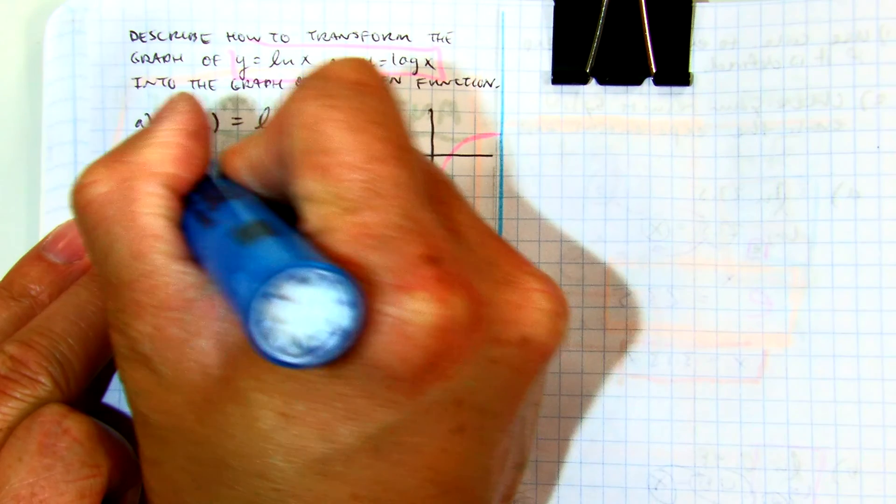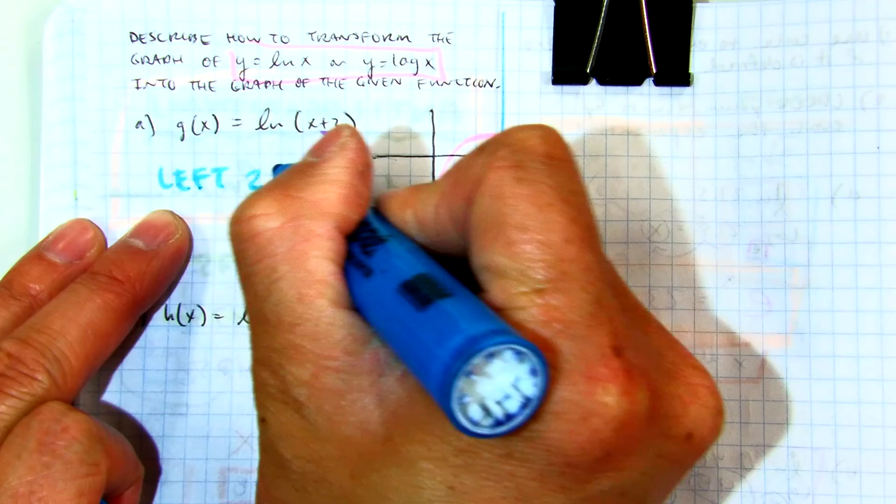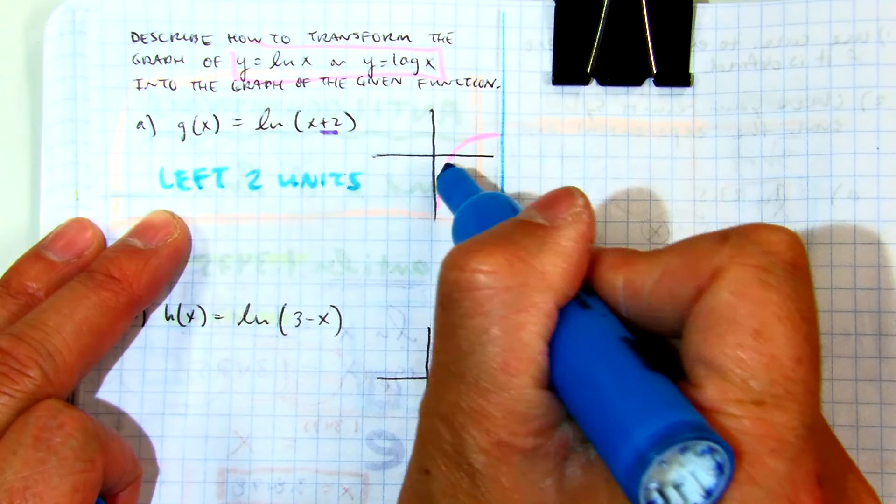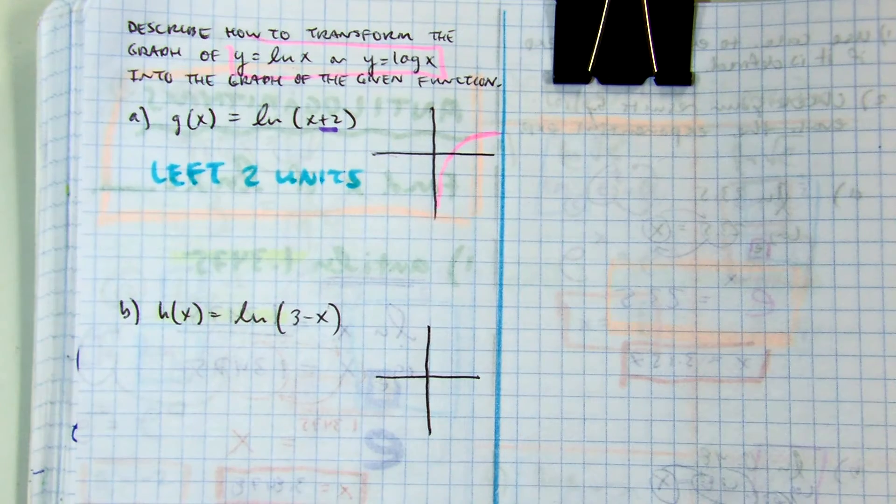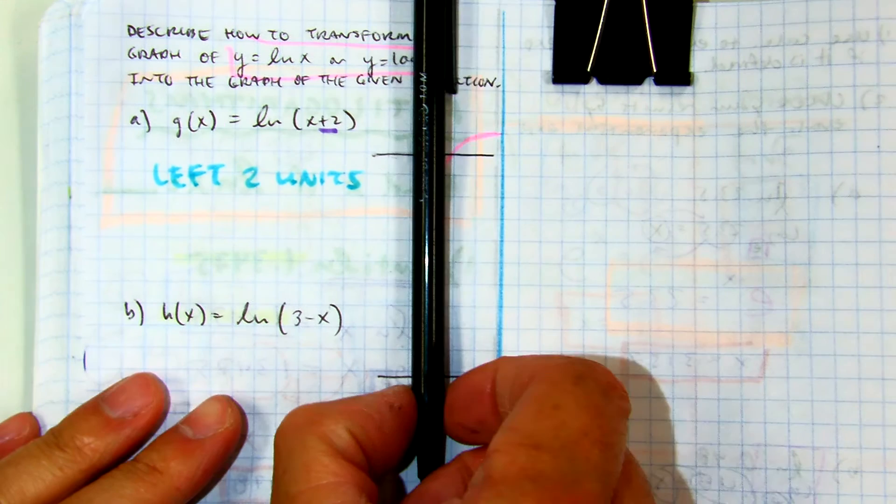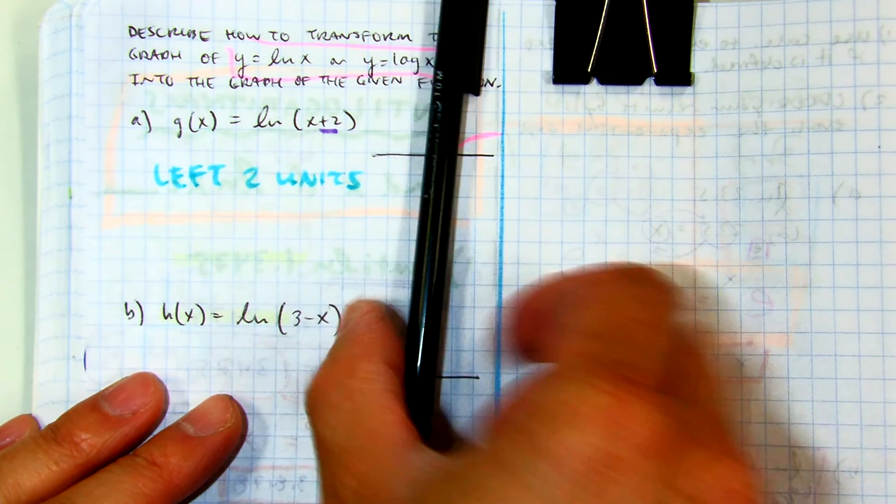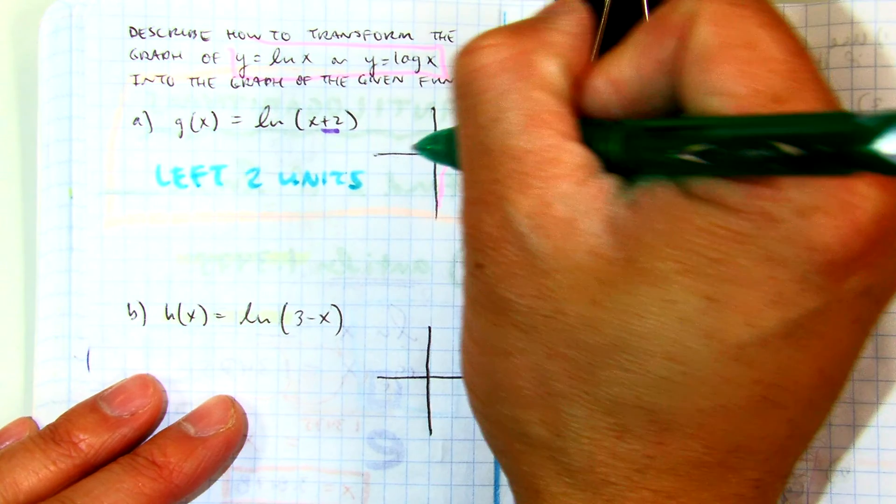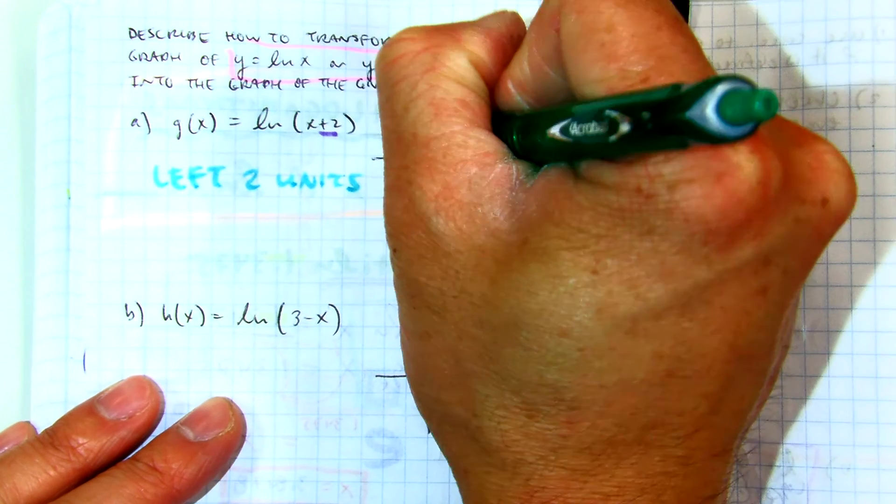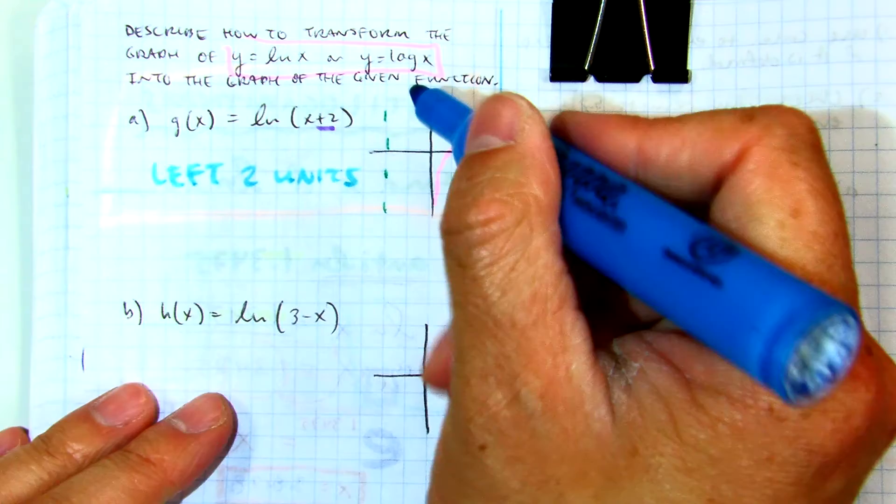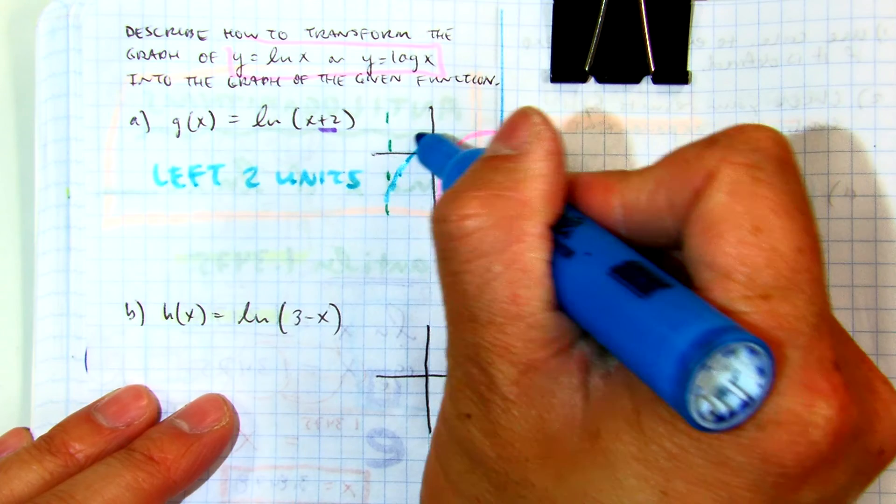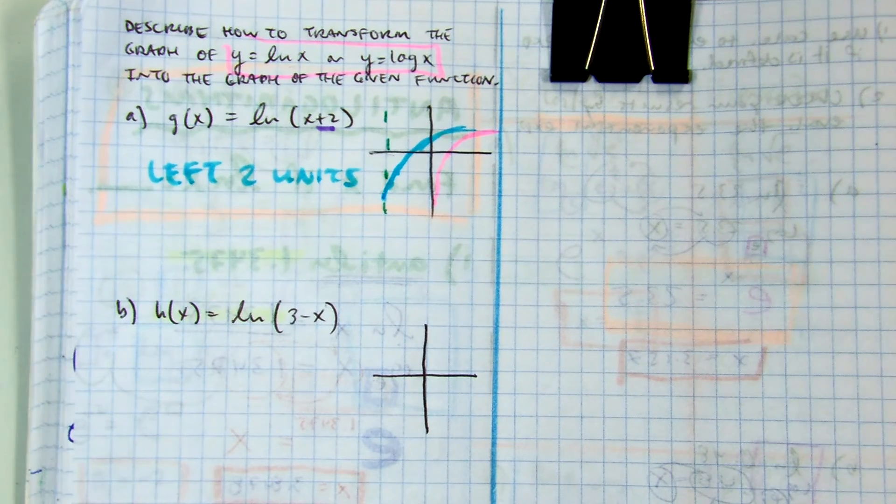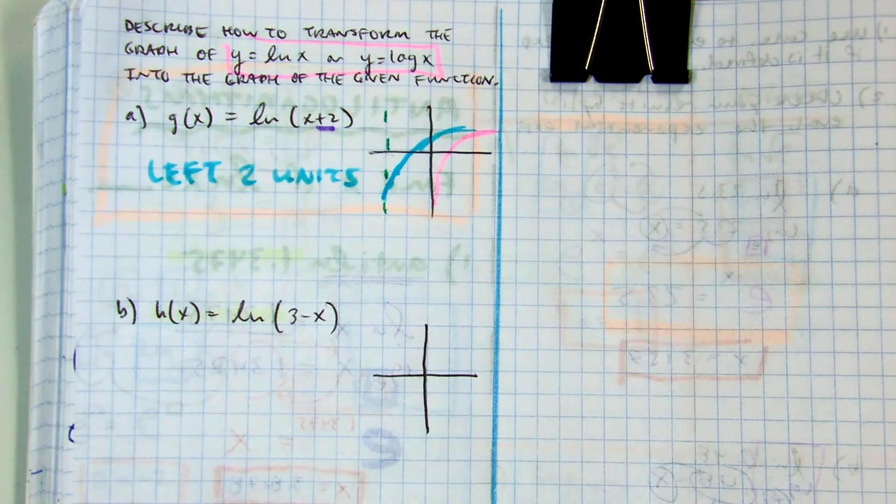Raise your hand if you got that. And essentially what's happening is the graph is just moving over 2 units. So if you had a vertical asymptote here on the y-axis, that is just moving over 2 units. And then your graph would probably look something like this. Just to visually show you that it's moving over to the left 2 units.